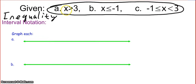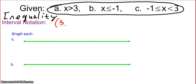So here we would read this as x is greater than 3. What is that saying? That's saying that x is the set of real numbers larger than 3. So how can we write that in interval notation? We're going to start with 3 and a parenthesis — parenthesis, 3, comma, infinity, and then parenthesis. So that would be (3, ∞).